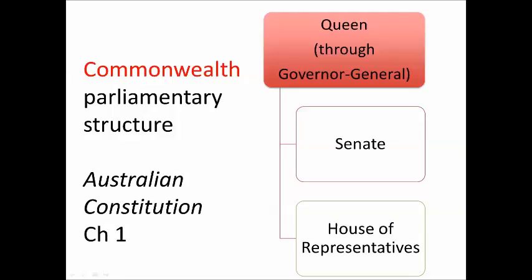Australia has a federal system. A collection of states that used to be colonies decided to come together, create an extra layer of government, and express the power of each of the states and the new federal government in a document called the Australian Constitution — referred to as a federal compact. Chapter one sets out the federal parliament: there is the Queen's representative, the Governor-General, who is part of the executive; there is a Senate, an upper house of review; and there is a lower house, the House of Representatives.